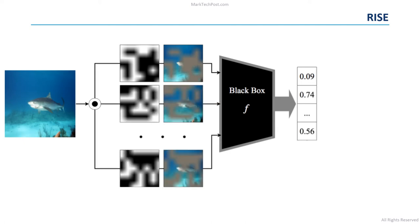This process is then applied for a certain number of randomly generated masks. For example, the researchers empirically decided to generate 4,000 masks when they evaluated RISE by using the VGG16 neural network.